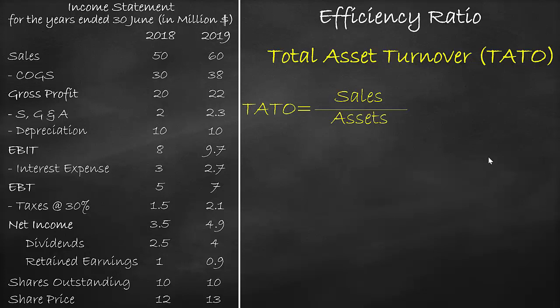We get the sales from the income statement and we get the assets from the balance sheet. The income statement is a flow account, which means it is calculated over a year, while the balance sheet is a stock account, which is calculated on a certain day. Since we cannot compare a year to a day, we need to convert a day into a year by getting the average of the two balance sheet items. So we will use one income statement and two balance sheet items.